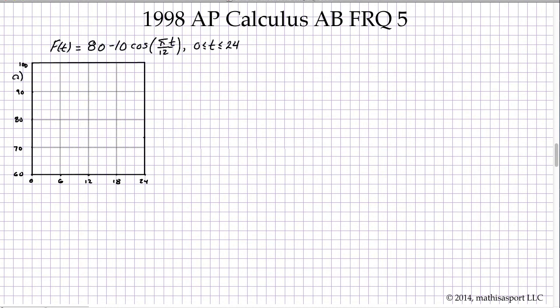We're given a function that involves a trig function over an interval 0 to 24, and we're going to be working with that. I've also drawn in a grid that's going to be used in part A. The only real information that I think we'll find useful is to remember the average value for a function over an interval is given here. Let's go ahead with part A.